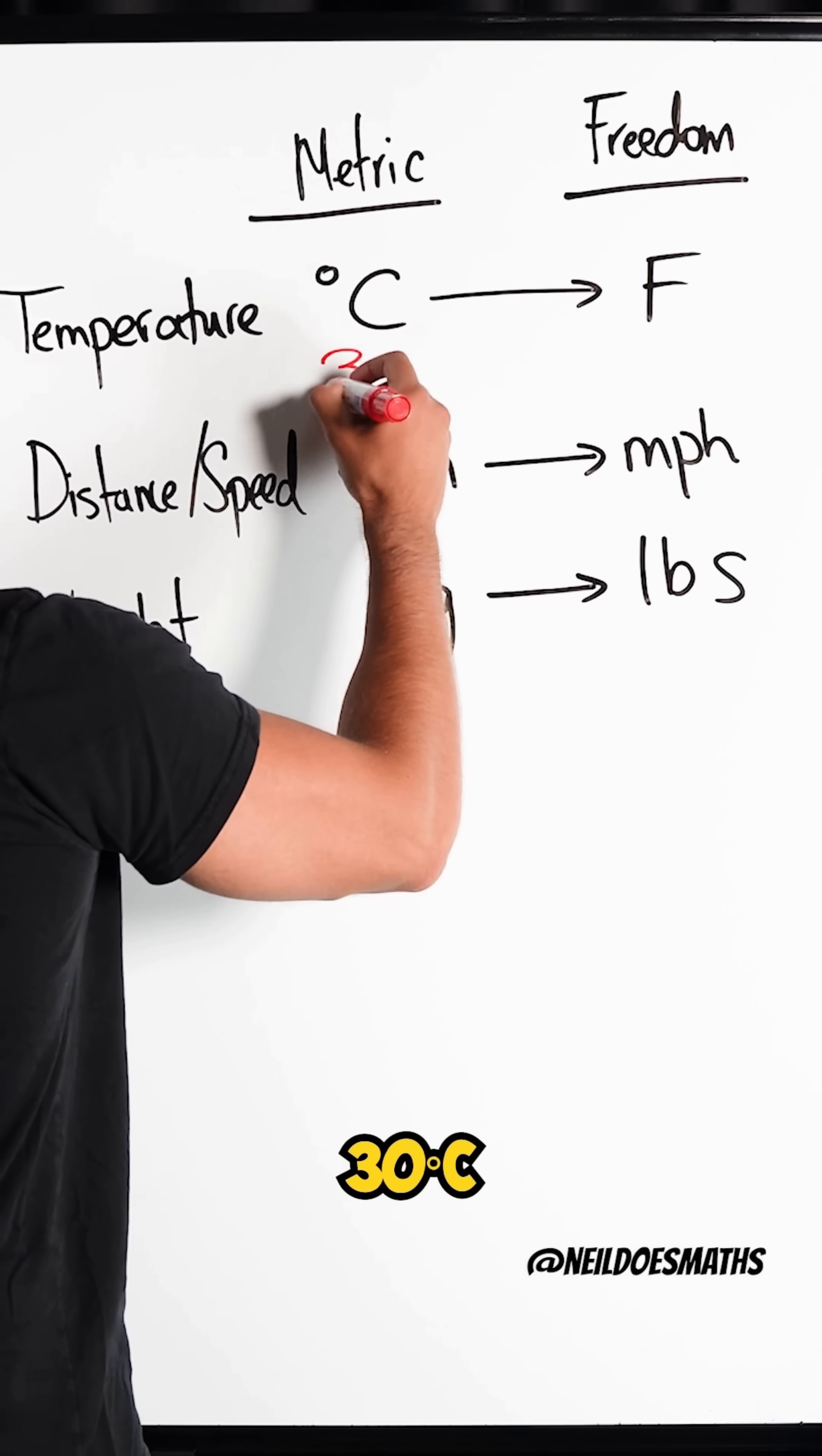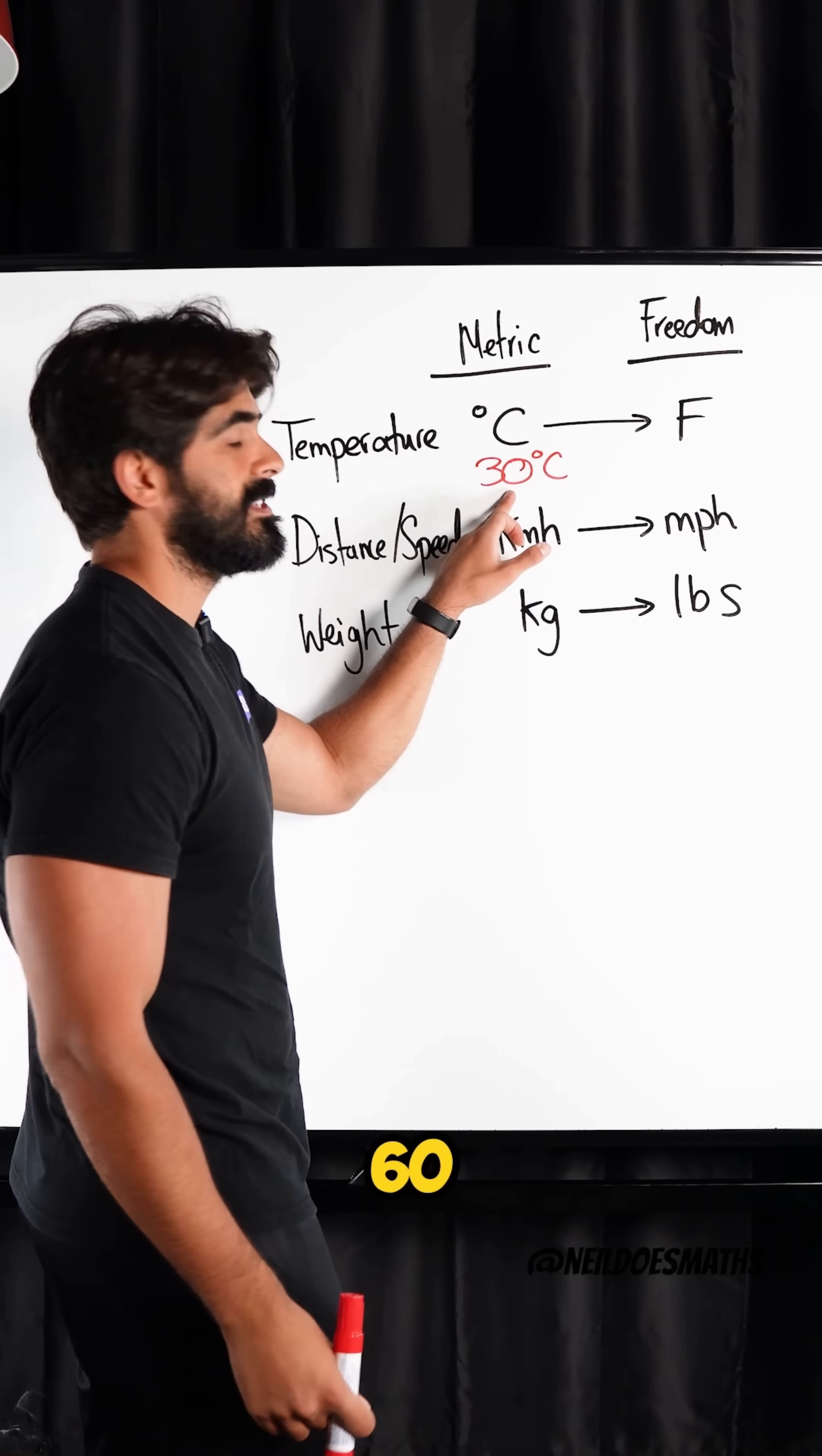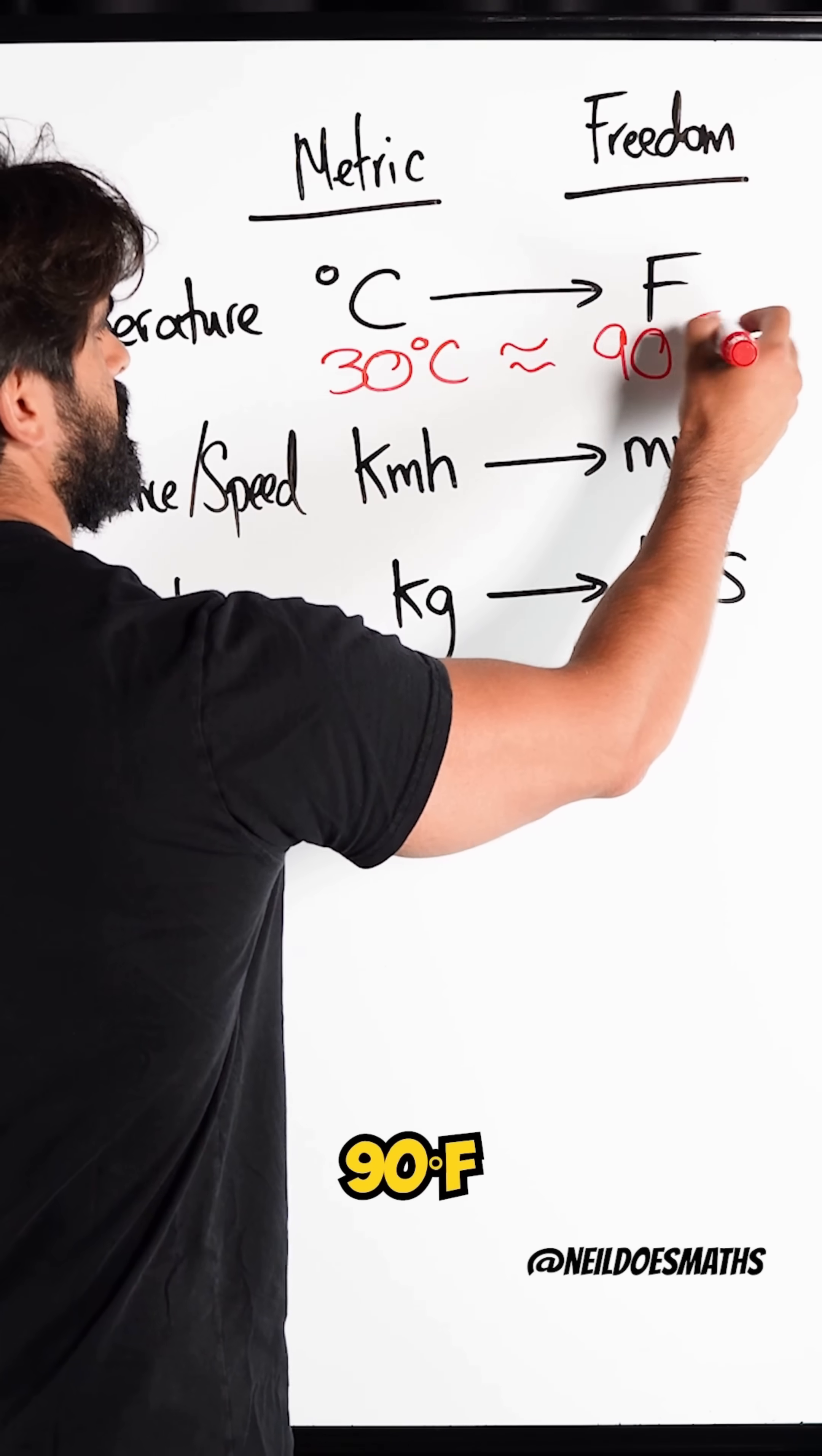For example, if we have 30 degrees Celsius, double it to 60 and then add 30. It's approximately 90 degrees Fahrenheit.